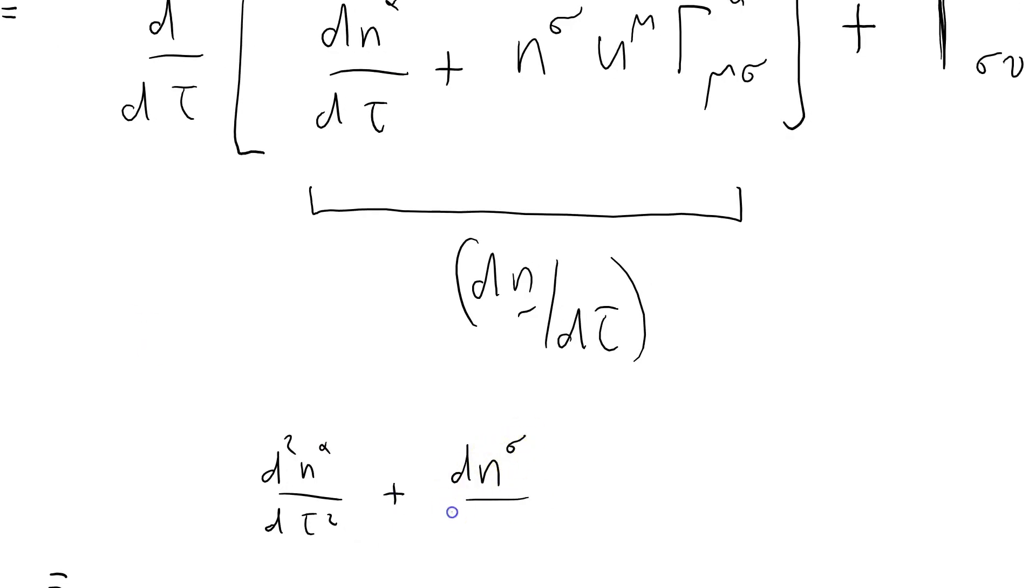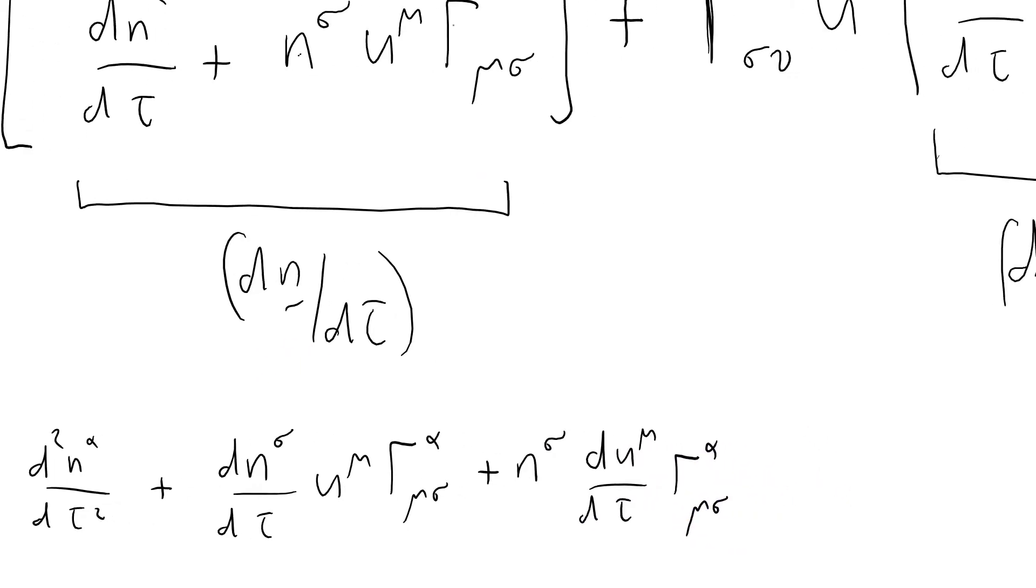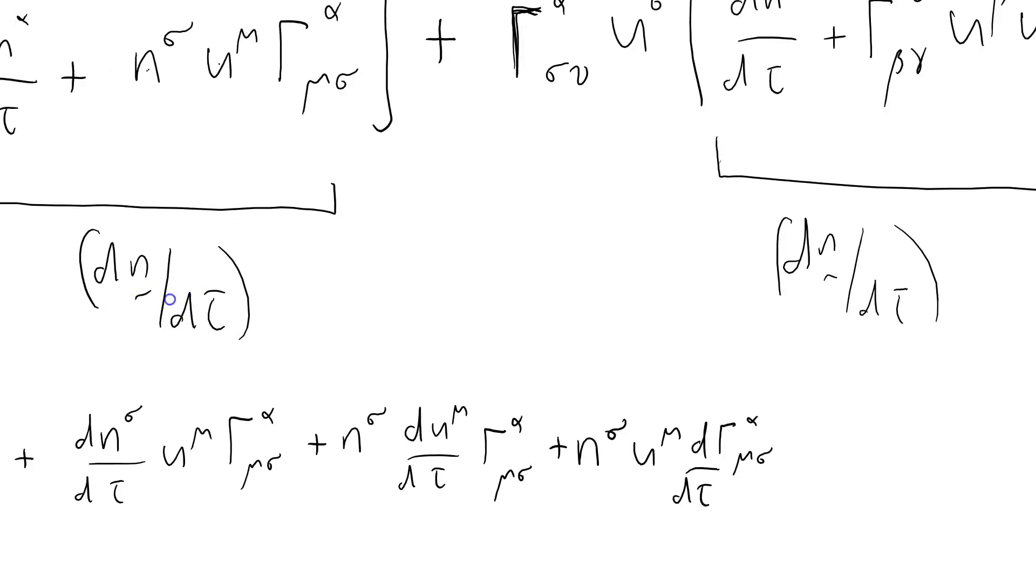We've got d 2 n alpha by d tau squared, that term there, plus d n sigma by d tau u mu Christoffel alpha mu sigma, that's this term here differentiating this one and leaving the other guys alone, plus n sigma d u mu by d tau Christoffel alpha mu sigma, which is this term here differentiating that one, plus n sigma u mu d by d tau of Christoffel alpha mu sigma. Good grief.